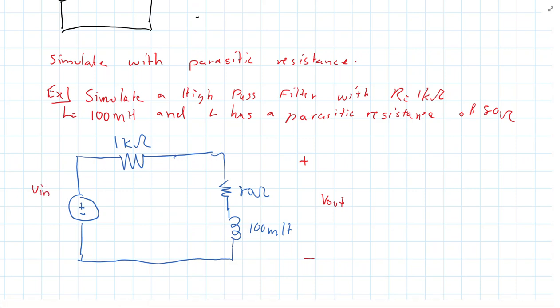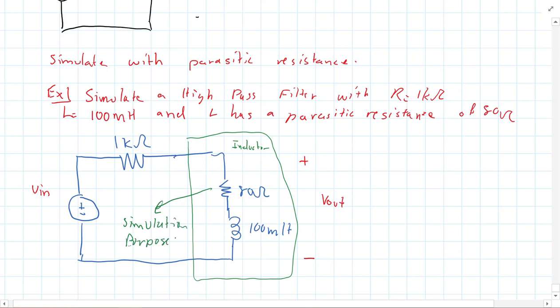And the other thing I like to do in the simulator, you can draw these boxes, is draw a box around it, maybe a dotted box, and you could say this is the inductor. And the reason I like doing that is that if you're thinking about building the circuit, sometimes people when they see the circuit from a simulation, they're like, well I've got to get a 1 kilo ohm resistor and an 80 ohm resistor. No, you just get the 1 kilo ohm resistor and the 100 millihenry inductor. This 80 ohm here is purely for simulation purposes.